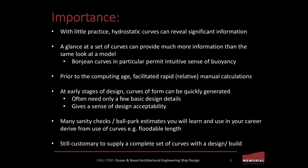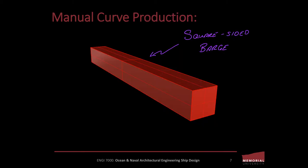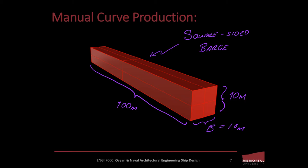I'll do some more examples in a future video with increasingly more difficult geometry requiring integration techniques, but for now consider the wall-sided barge on screen. The barge has the dimensions shown: a beam of 10 meters, a length of 100 meters, and a molded draft of 10 meters. Just by inspection, we can identify that the cross-sectional area is uniform throughout the vessel's length, with each cross-section having a maximum area of 100 square meters and the ship having an overall volume of 10,000 cubic meters. Based on the definition of a Bonjean curve, the Bonjean curve should look the same at any location across the length of this hull form.